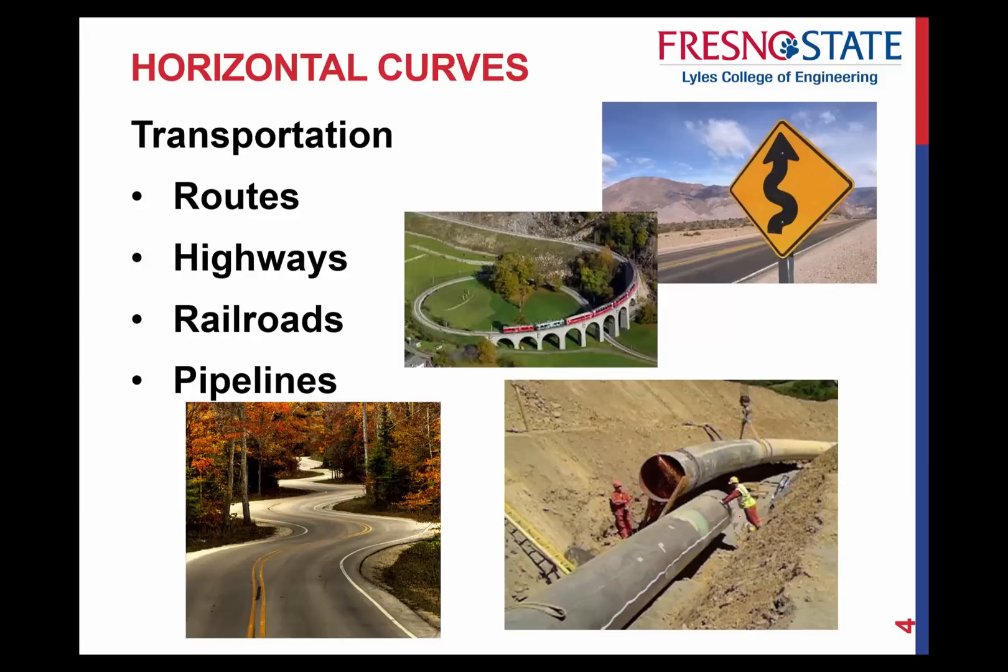Okay, so where do we use these things? Where have you seen this before? Well, you've seen them in routes, just like I just showed you for highways. Railroads also use them. Railroads are special. They use spiral curves. We'll discuss a little bit about the difference here in just a minute. And pipelines. You have straight sections of pipelines, you've got to connect by large curves. So anything we do, whether it's transportation or construction, we're dealing with horizontal curves.